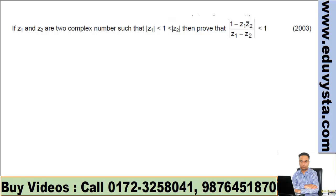Try this question which was asked in IIT JEE 2003: if z1 and z2 are two complex numbers such that mod z1 is less than 1 less than mod z2, then prove that the modulus of (1 minus z1 times z2 conjugate) divided by (z1 minus z2) is less than 1. We have to prove this result.